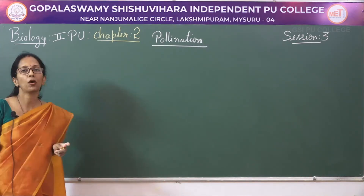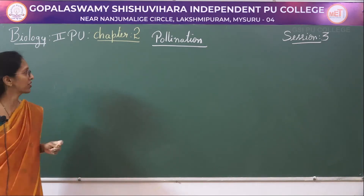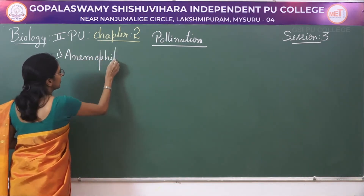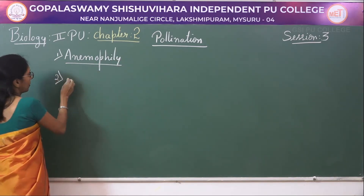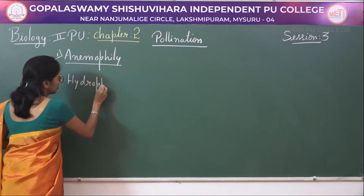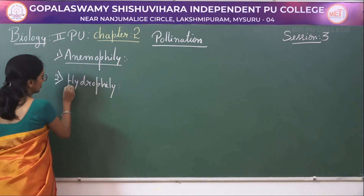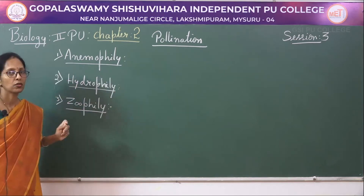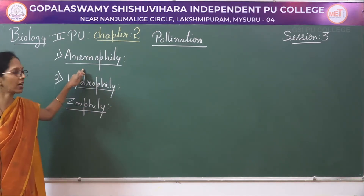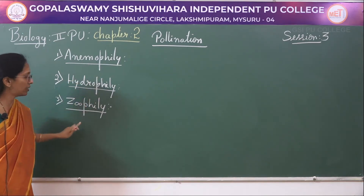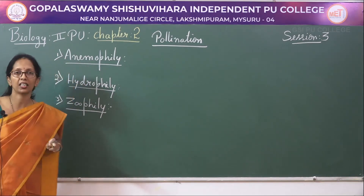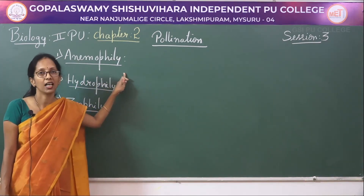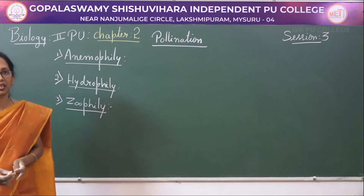Next, based on pollinating agents, there are three types of pollination: anemophily, hydrophily, and zoophily. Anemophily — 'anemo' refers to wind — means wind-pollinated flowers are said to be anemophilous, and the phenomenon is anemophily. The best example is grass.